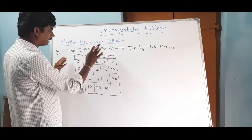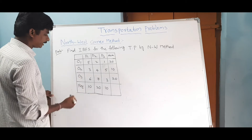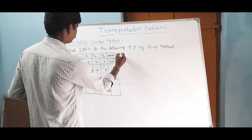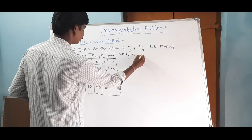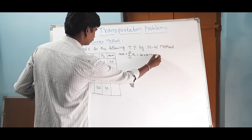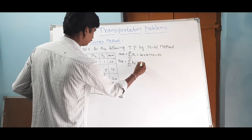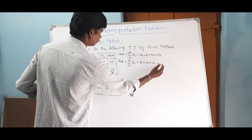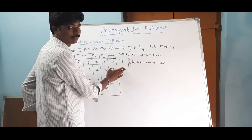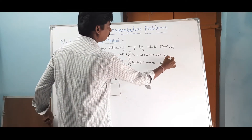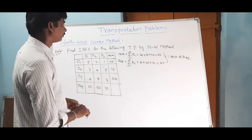We have three destinations and three origins. First, check balance. Availability equals summation ai = 20 + 10 + 20 = 50. Requirements equals summation bj = 10 + 20 + 10 = 40. Therefore, availability is not equal to requirements — this is an unbalanced transportation problem.